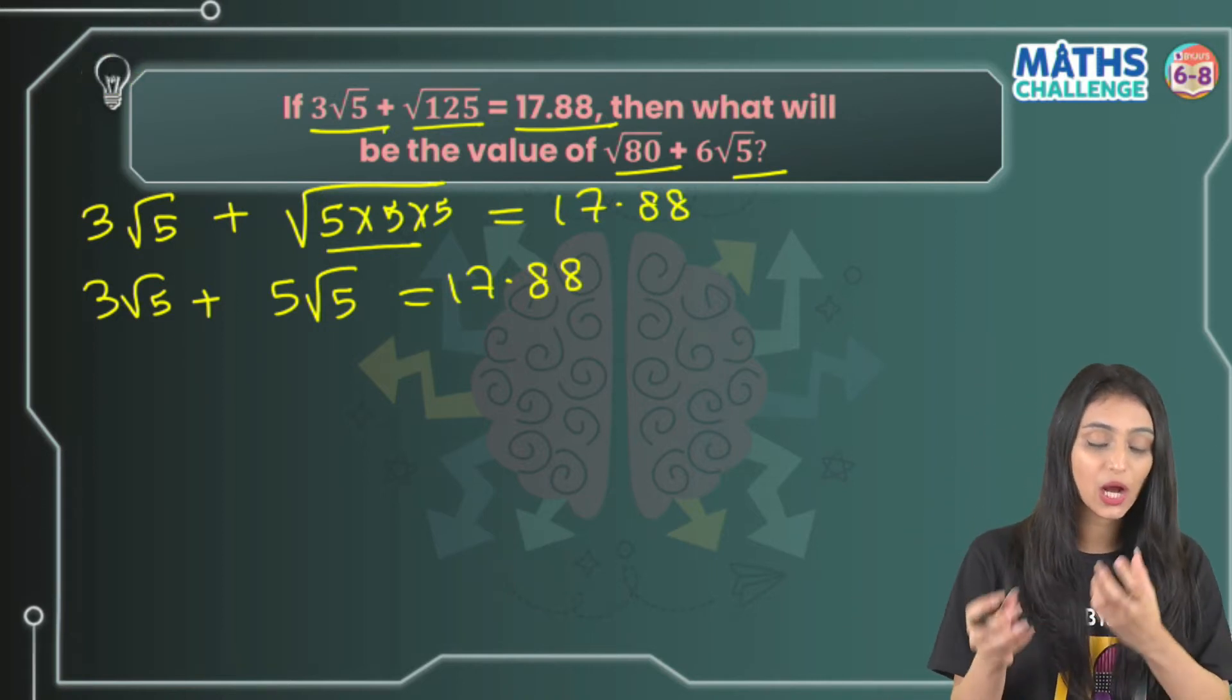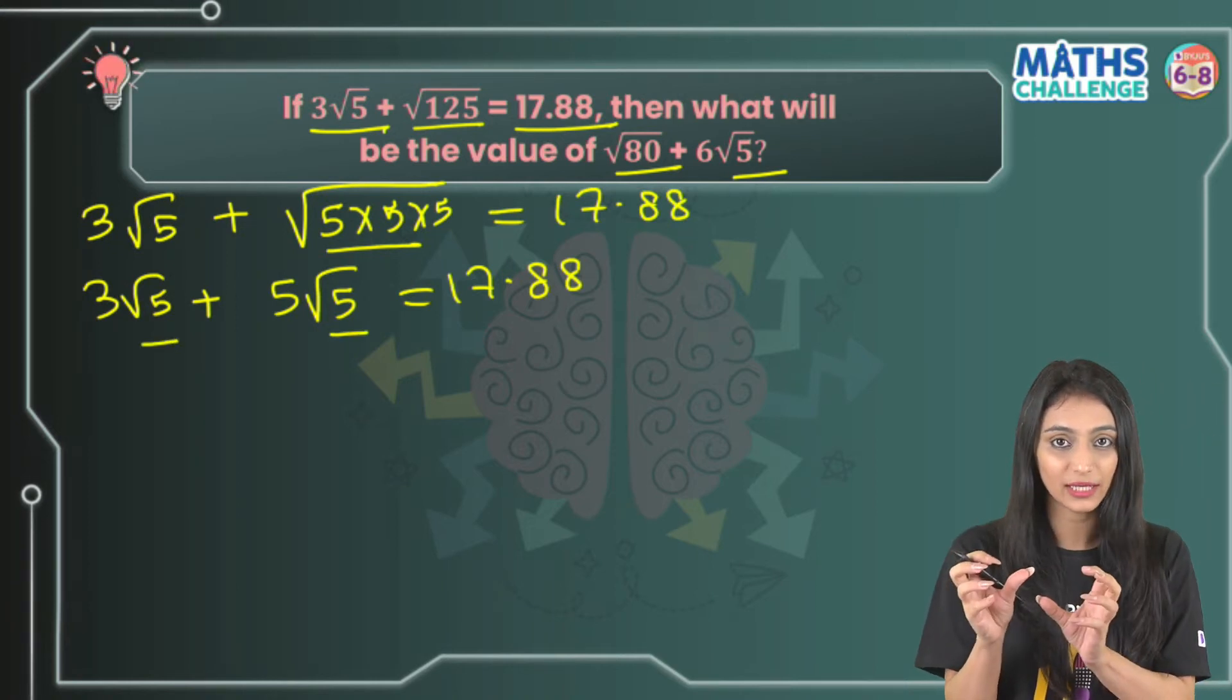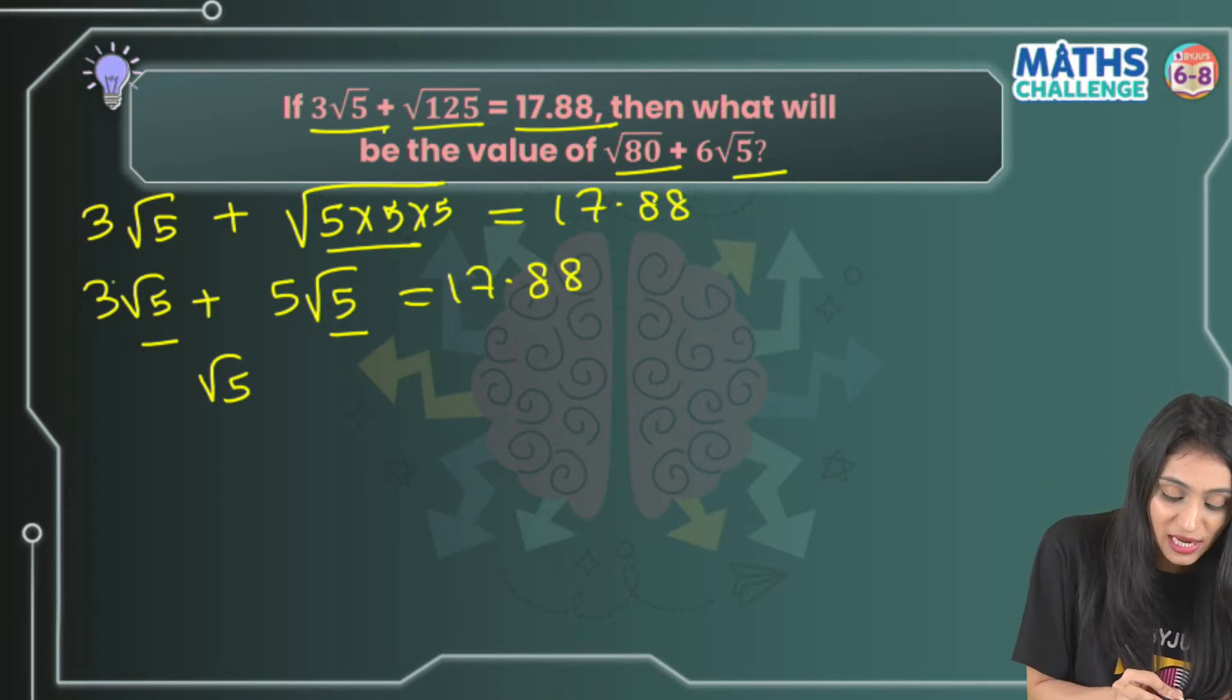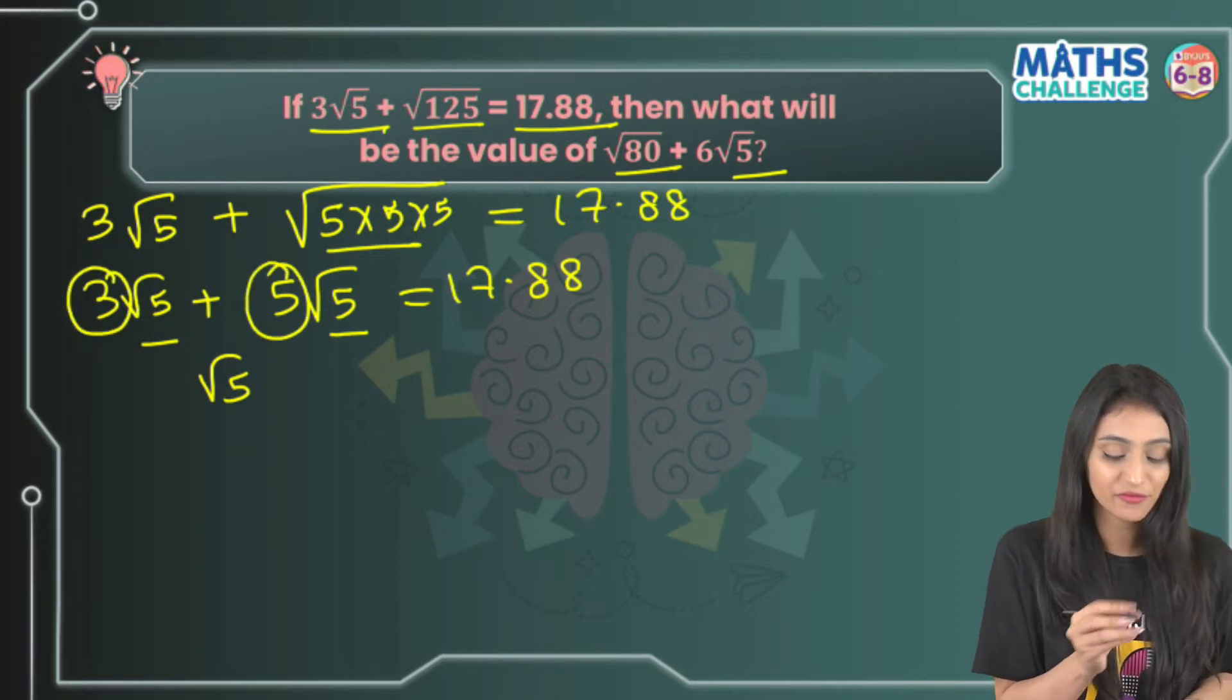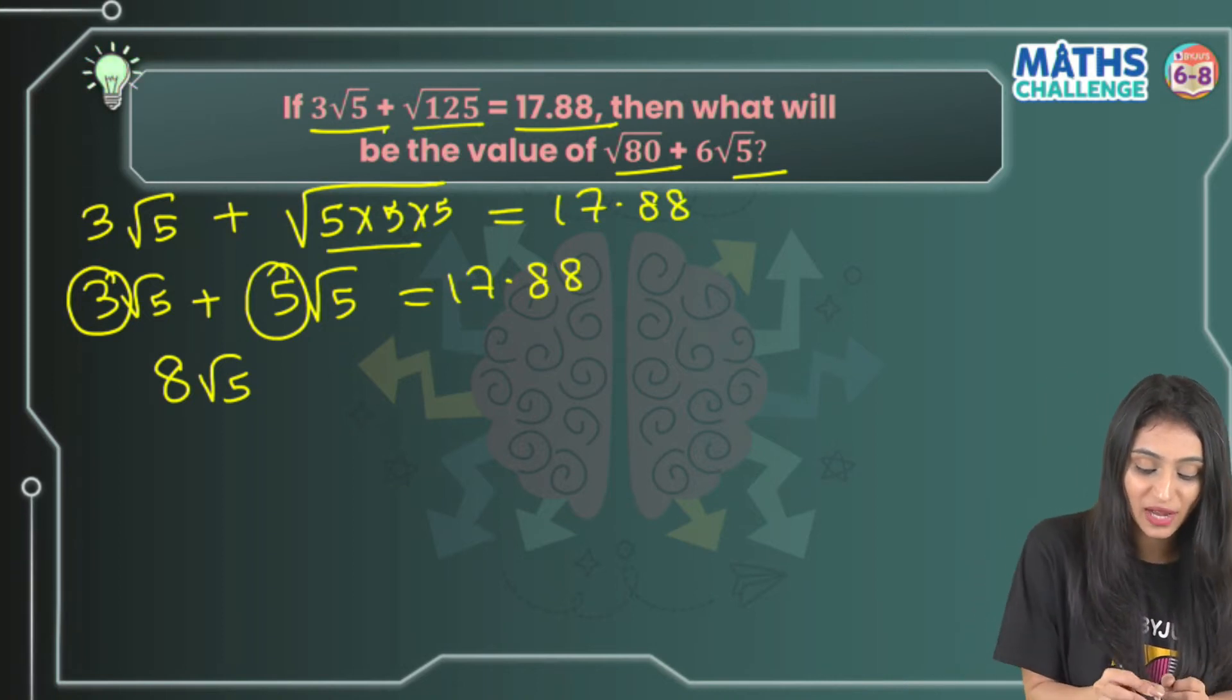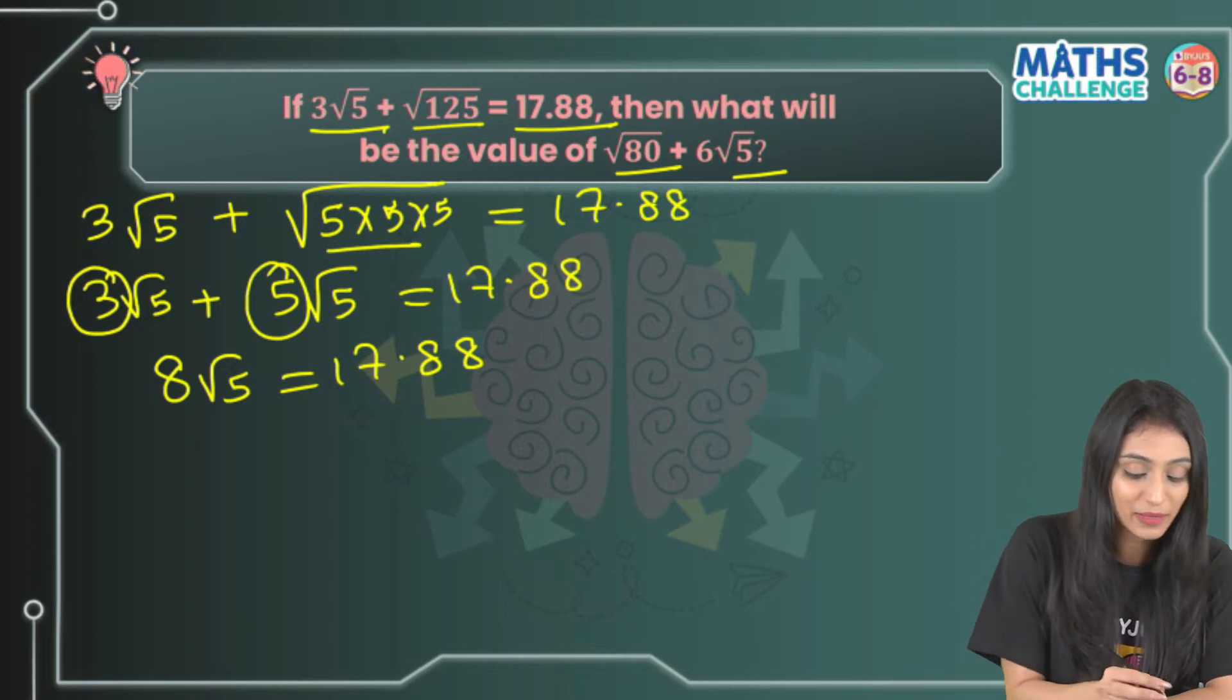Now 3√5 + 5√5. I know many students get stuck here on how to add numbers and roots. You see √5 is common, so we just add the coefficients: 3 and 5. That's 8. So 8√5 = 17.88.